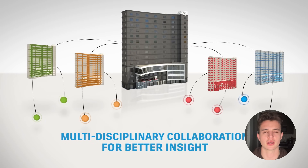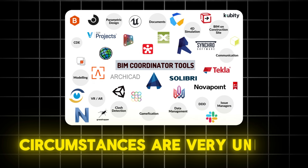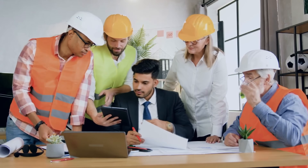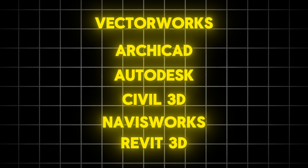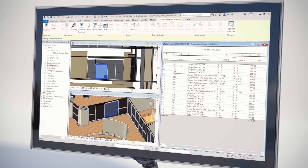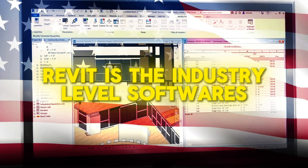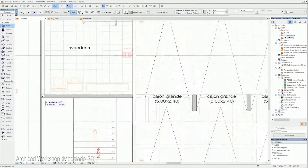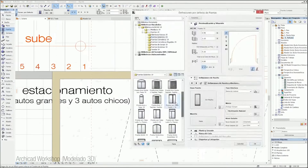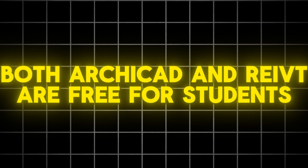When it comes to picking a BIM software, the circumstances are unique and may depend on where you're located in the world. Vectorworks, ArchiCAD, Autodesk Civil 3D, Navisworks, and Revit are the most common. In the United States, Revit is the industry standard for BIM, while in Australia or Europe, ArchiCAD might be a more popular choice. The good news is both ArchiCAD and Revit are free for students.